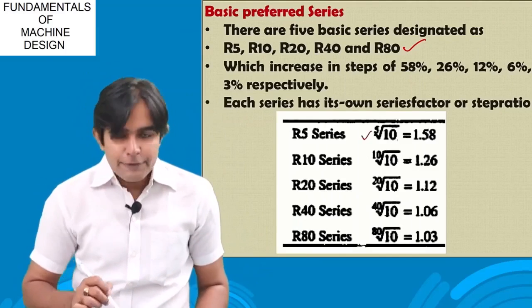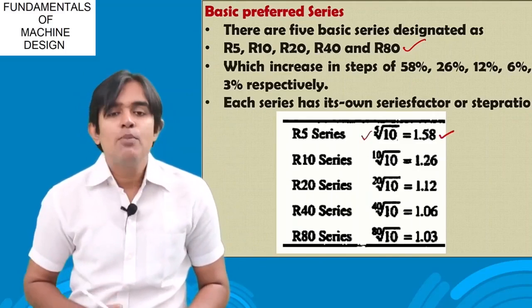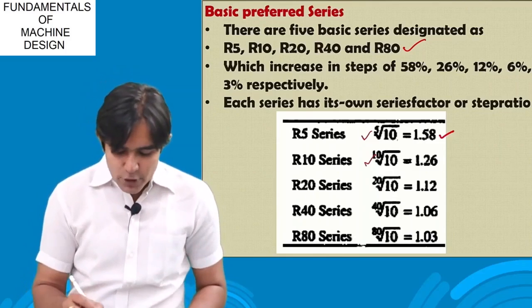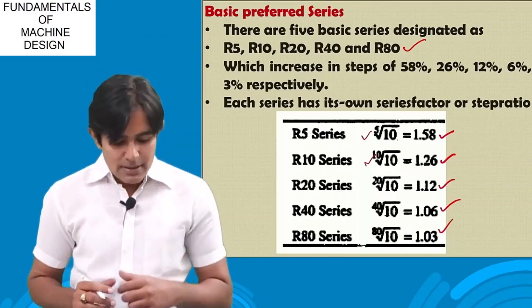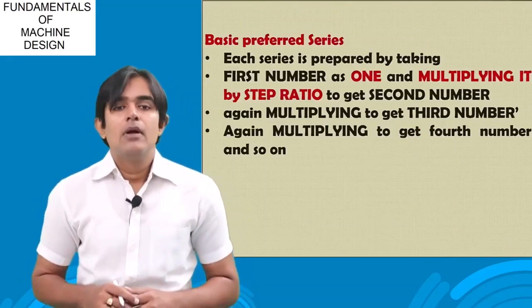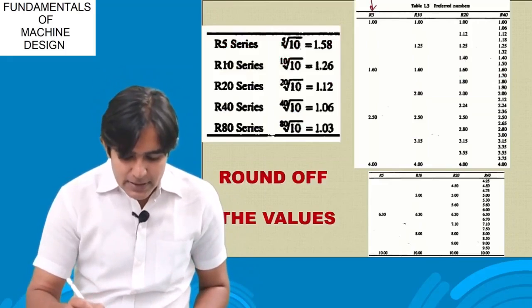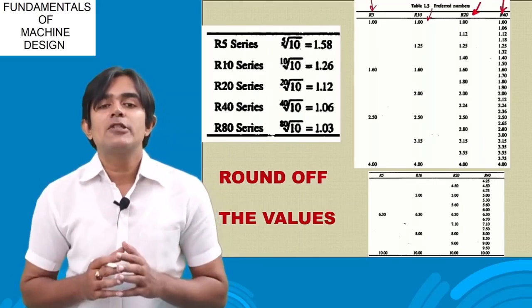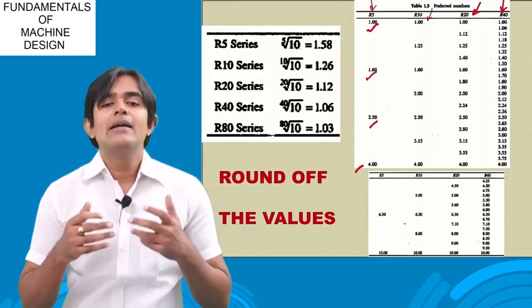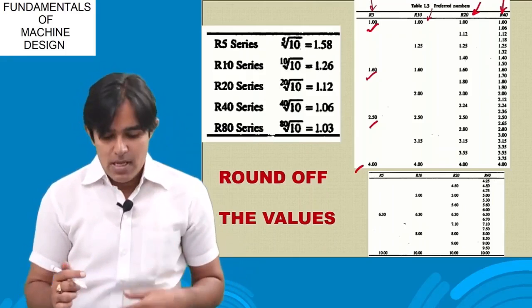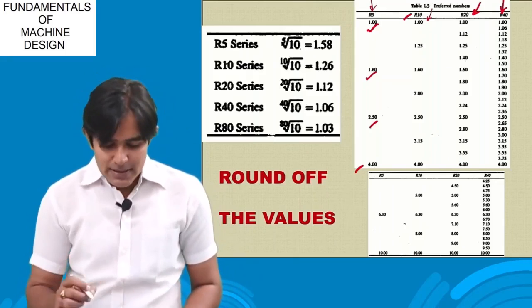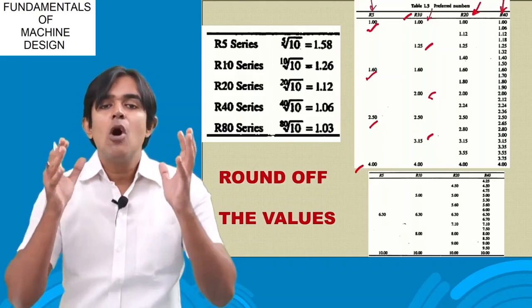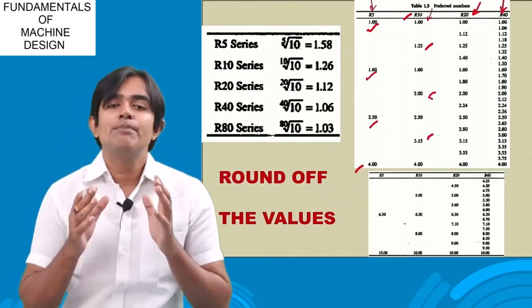In a diagram, you can see R5, R10, R20, and R40 series. If I am manufacturing products using the R10 series, I get fewer parts but they are in a certain ratio. If I use R10 compared to R5, I get 3 more parts manufactured. So depending on how many sizes I want to manufacture, I can select a proper basic series.